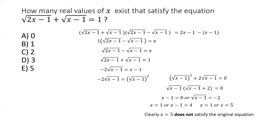Checking x = 1 in the original equation: √(2·1−1) + √(1−1) = √1 + 0 = 1. That satisfies the equation. Checking x = 5: √(2·5−1) + √(5−1) = √9 + √4 = 3 + 2 = 5. That clearly does not satisfy the original equation, which requires the sum to equal 1.